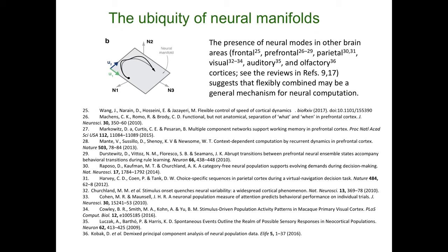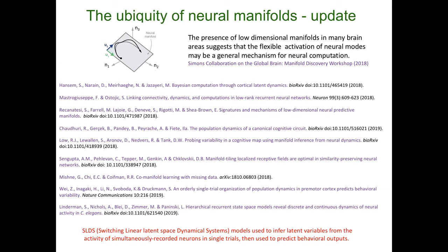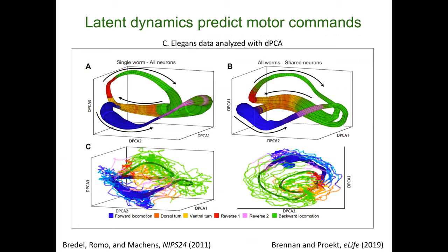Although we were focused on motor cortex, we could already tell in 2017 that the idea of low-dimensional activity — a neural manifold spanned by neural modes — had been observed in a variety of other cortical areas: frontal, prefrontal, parietal, visual, auditory, and olfactory. Since then, a lot of very interesting work has extended this to hippocampus, the head-direction circuit, and there's been active investigation into what confines dynamics to a low-dimensional manifold — whether it's network connectivity or external inputs.